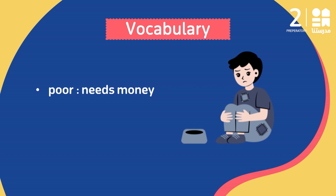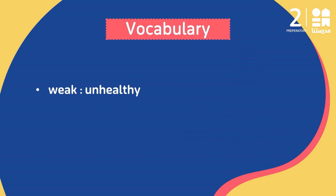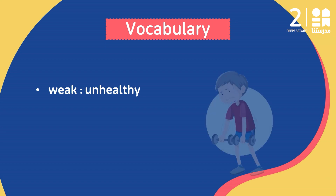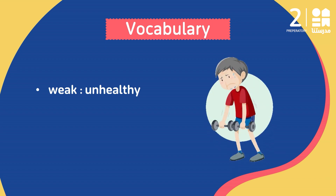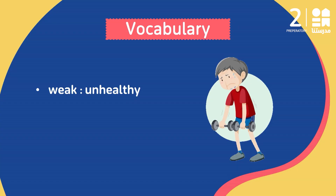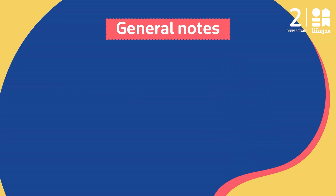He is a poor boy — he needs money and food. He is weak and unhealthy. Look at the boy: is he strong? No, he is weak. He can't lift the dumbbells, so he is a weak boy.